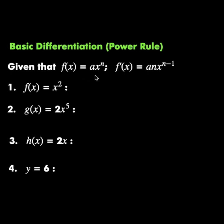Given that the function f is equal to ax raised to power n, the derivative of f is equal to anx raised to power n minus 1. That is the power rule.